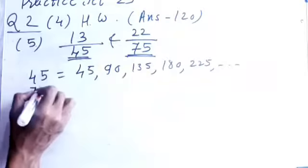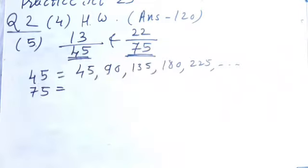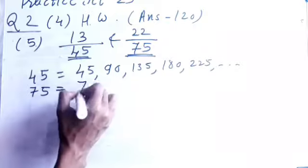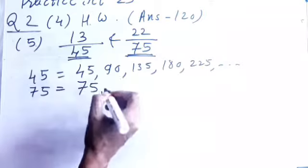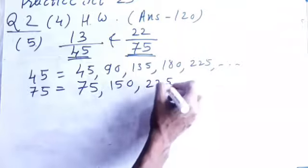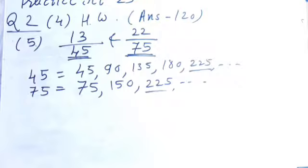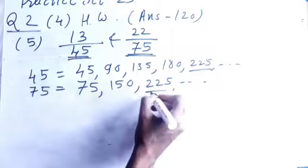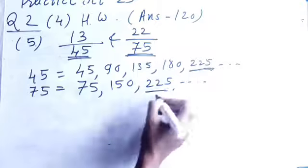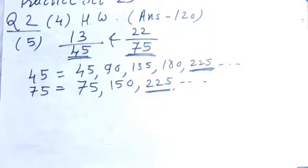And again, which is the second denominator is 75. Why I am taking denominators only because they just ask, you have to write the equivalent fractions with the same denominator. Then table of 75 you need to make. That is 75, 150, 225 and then see, 225 is the common here. So, their LCM we got is 225.